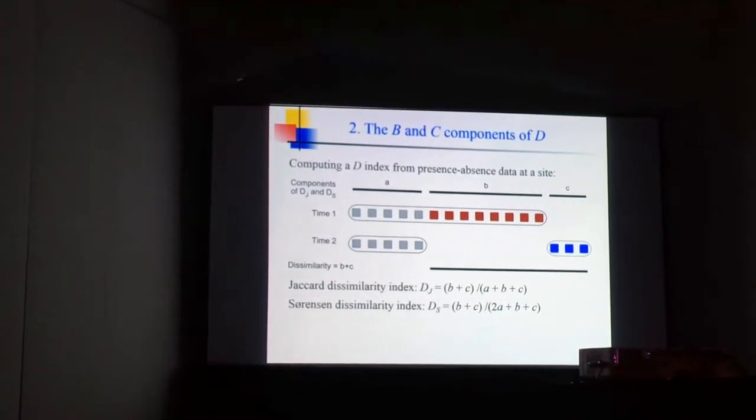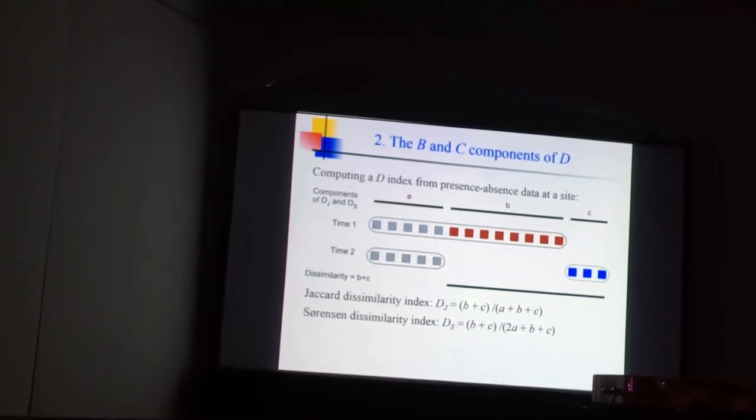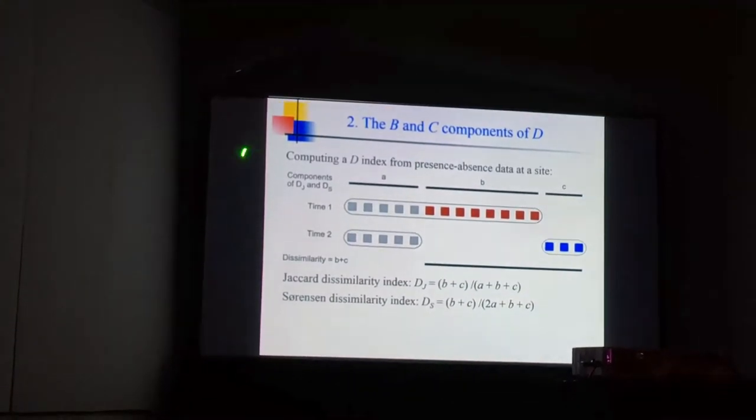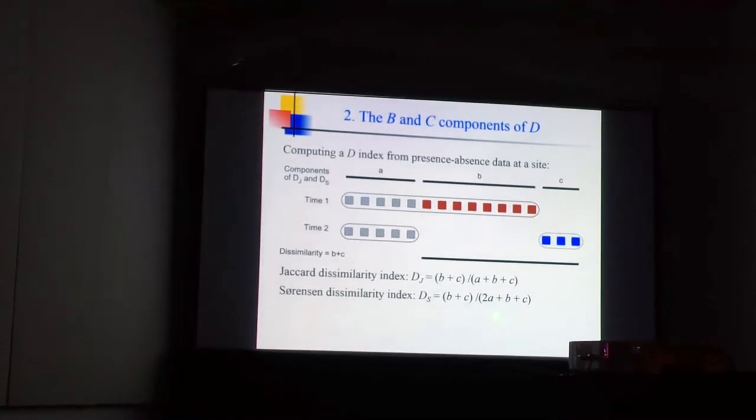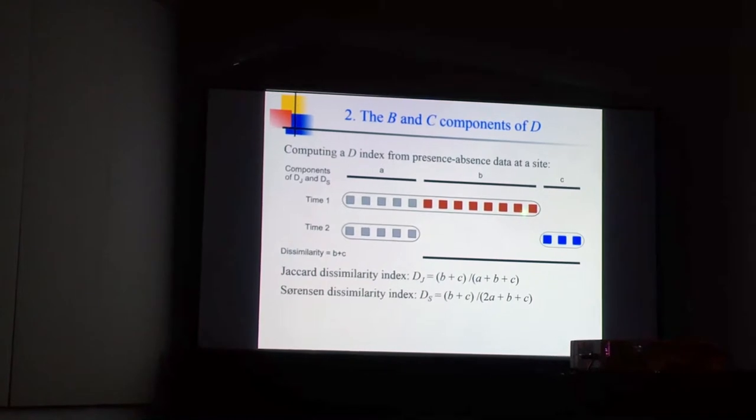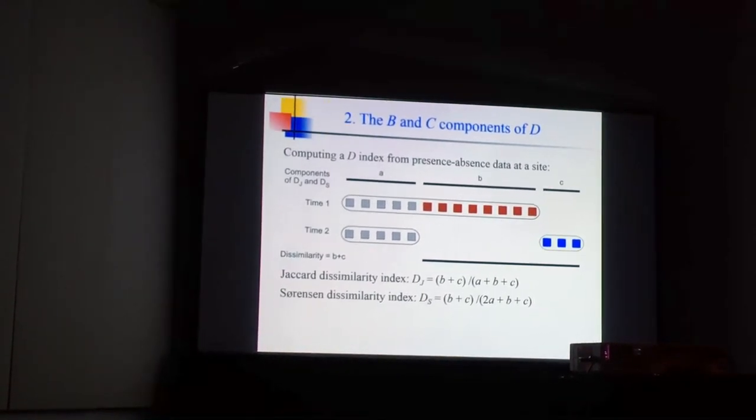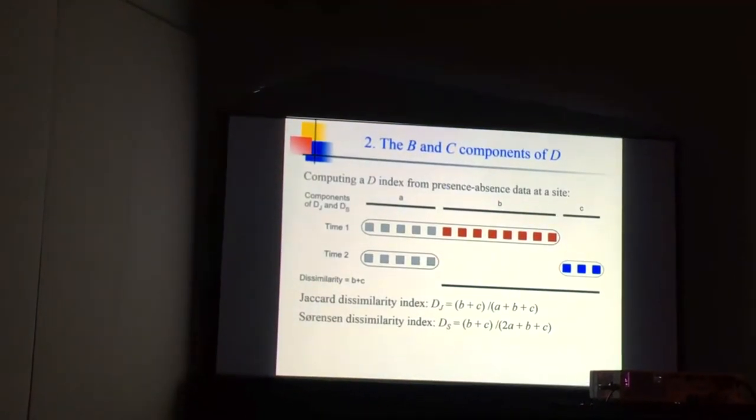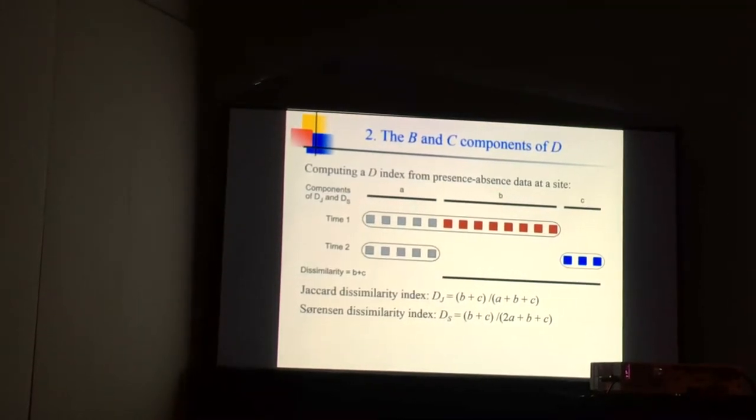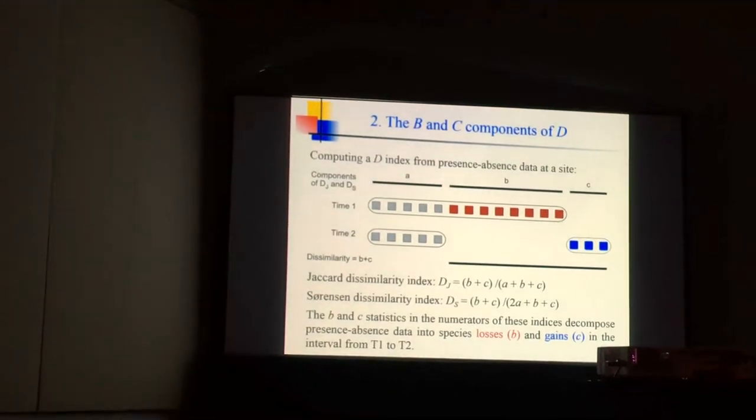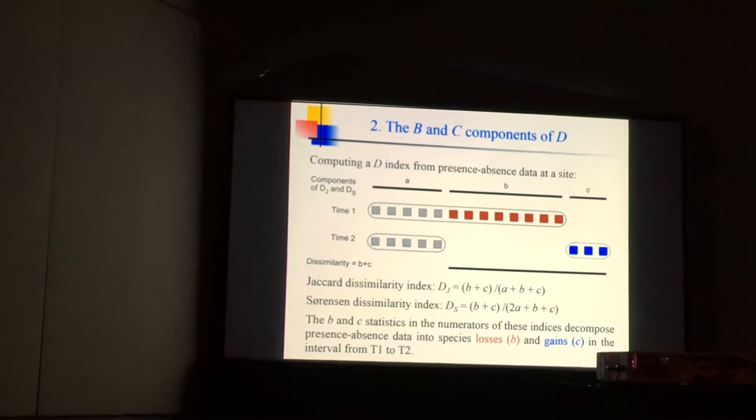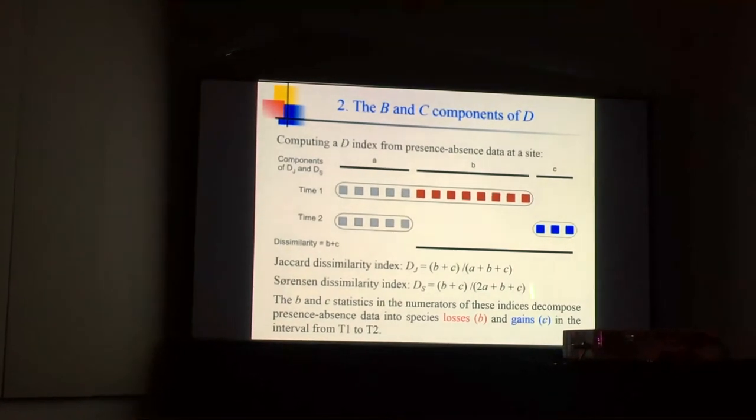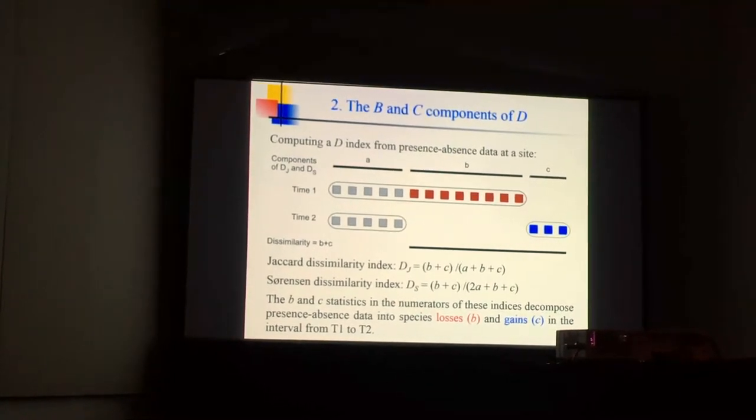These are the two usual coefficients that we use most often, with B plus C in the numerator and A plus B plus C in the denominator. The Jaccard coefficient has been used since the year 1900. The B and C statistics in the numerator of these indices decompose the presence-absence data into losses of species (B) and gains of species (C). And we will see more of that in a moment.